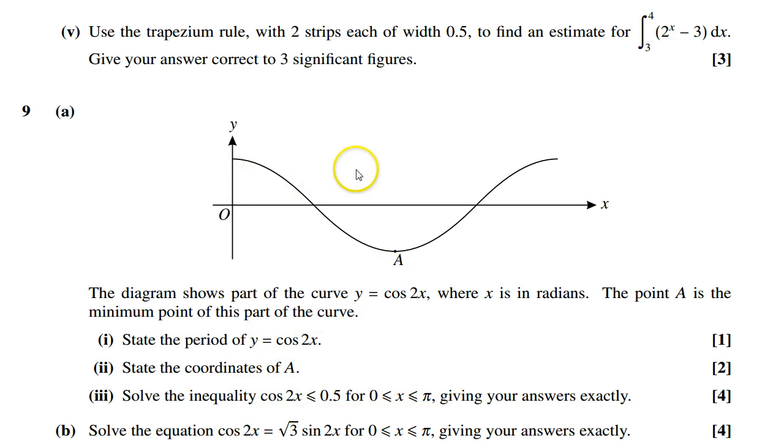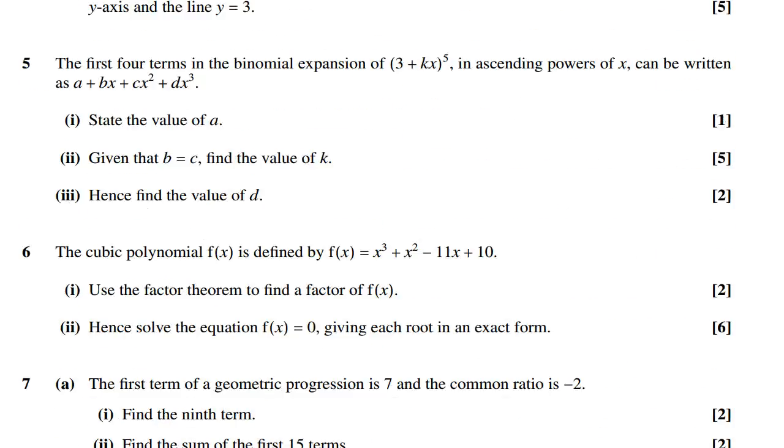2x, got the minimum here. You just need to worry about the period, the coordinates of the minimum. Solve this inequality - so you draw a horizontal line at 0.5 and then we can work out what the solutions are. And solve this trig equation here. So all in all, a fairly user-friendly paper. Eight and nine are probably quite long-winded, so I would leave those to the end of the paper anyways.